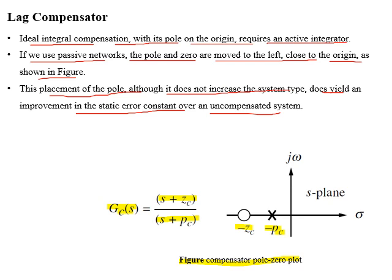The figure represents the compensator pole and zeros which are placed near to the origin, and the transfer function for the lag controller.